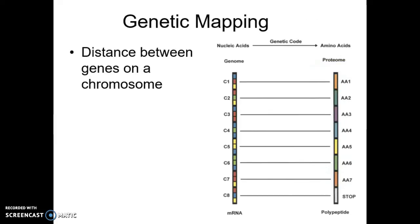As we continue to delve further into genetics, we're finding out that we can actually map out the genome. A lot of this has been done for certain species, but there is still tremendous work to be done. Genetic mapping is looking at the distance between genes on a particular chromosome. In our example, C1 through C8 are genes — strips of A, T, C, and G that transcribe and translate into amino acids to give us our protein. We're identifying where these genes are on a chromosome and how much space there is to the next gene.